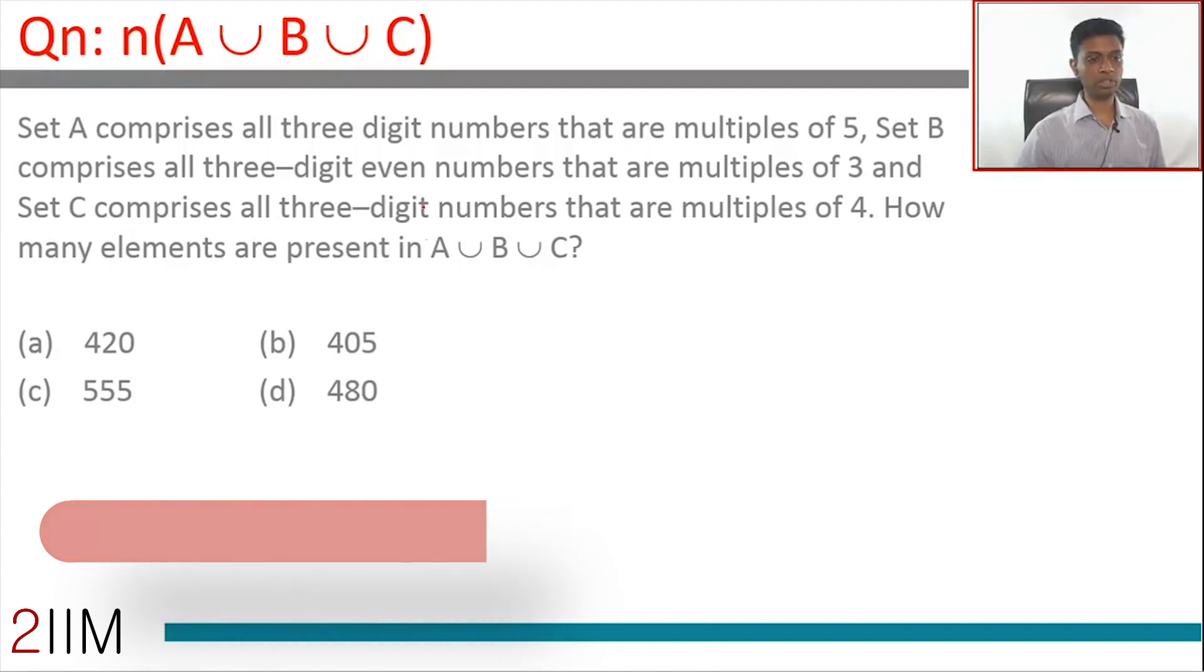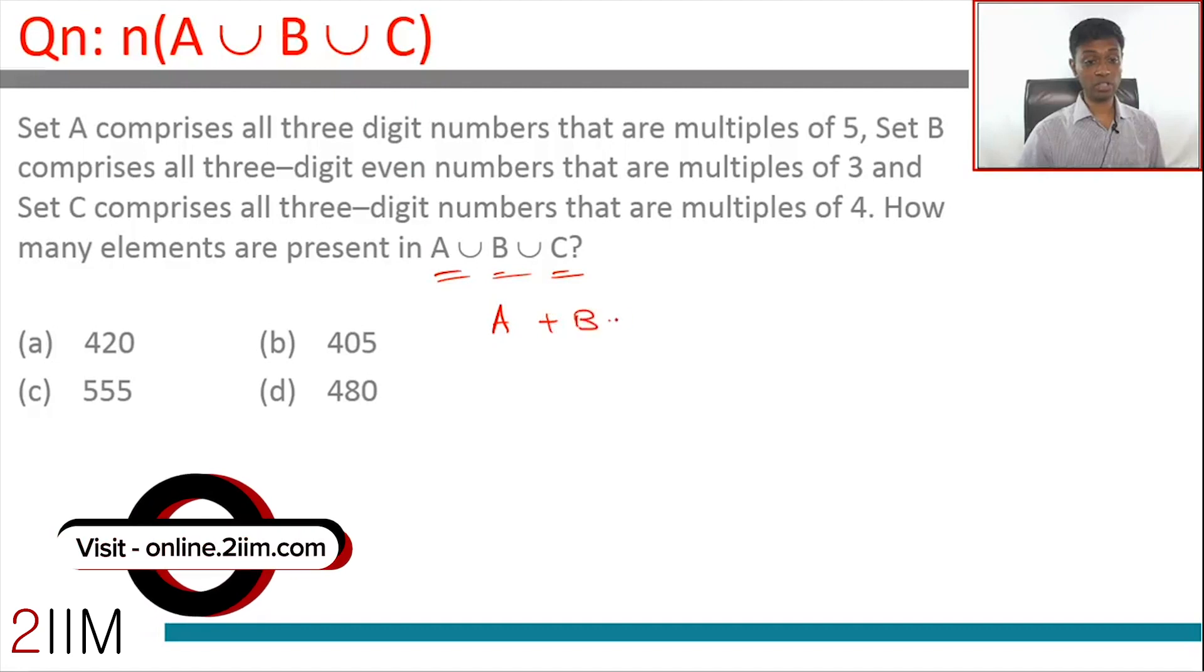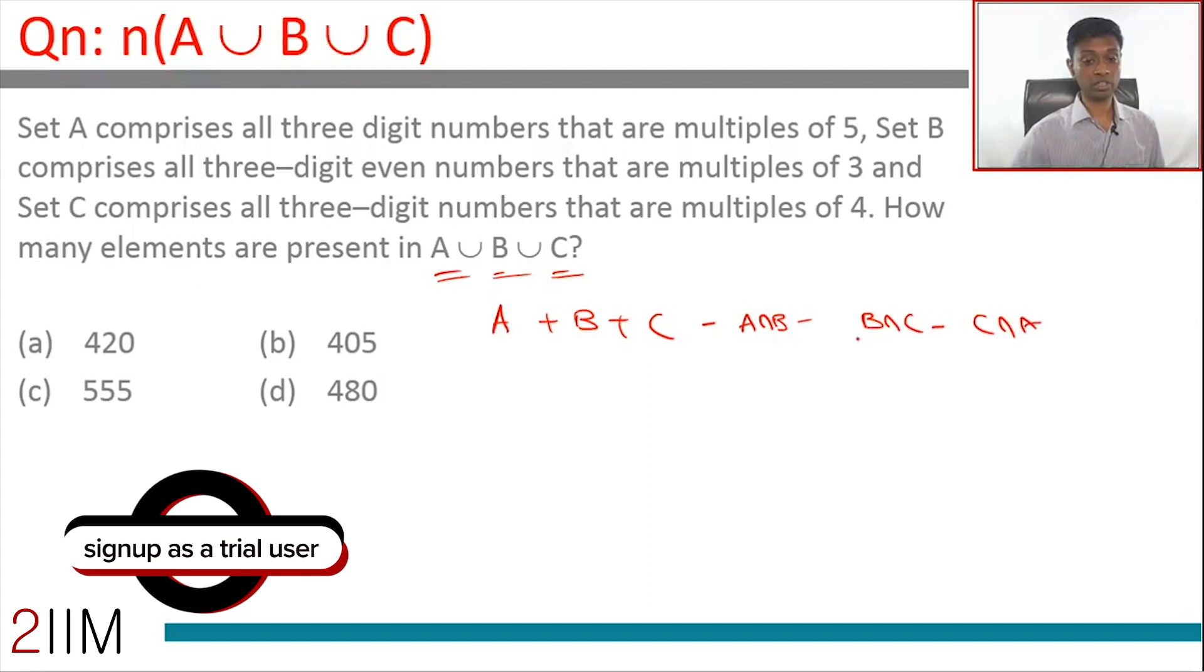How many elements are present in A union B union C? The formula for A union B union C is: A plus B plus C minus A intersection B minus B intersection C minus C intersection A plus A intersection B intersection C. I'm writing the number of elements in each set, not the set itself—can't add two sets, we're adding the number of elements in each set.